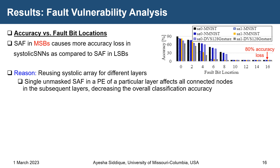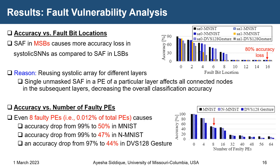For fault vulnerability analysis, we examine accuracy versus fault bit location. Injecting faults at different bit positions — MSB (most significant bit) and LSB (least significant bit) — we observe that a stuck-at fault in the MSB causes more accuracy loss than in the LSB. The reason is that we reuse the systolic array across layers, so a single unmasked fault in a processing element of one layer affects all connecting nodes in subsequent layers, decreasing overall accuracy. Even just 8 faulty processing elements can cause accuracy to drop from 99% to around 47–50% in MNIST and from 97% to 44% in DVS gesture at the MSB.